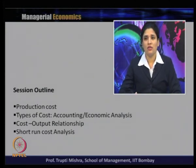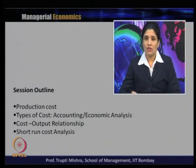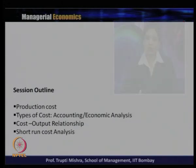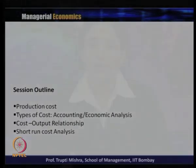Essentially the relationship between the average cost, that is average variable cost, average fixed cost, marginal cost, and then we will see how from the total cost we derive the different kinds of average cost.